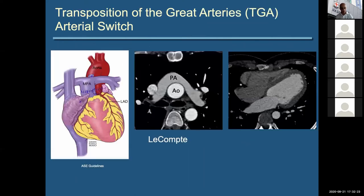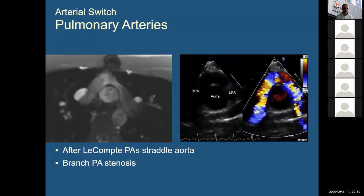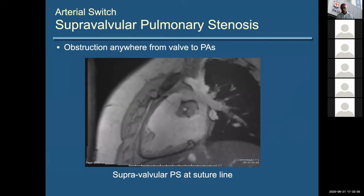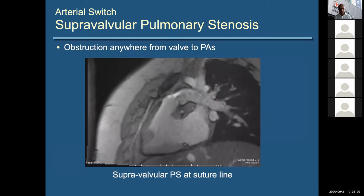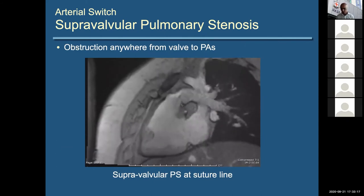The arterial switch has quite a characteristic appearance. In association with a Lecomte manoeuvre, the PAs are seen draped over the ascending aorta. Importantly, look at the ventricles — they actually look pretty normal. You don't have a big hypertrophied right ventricle because it's where it should be, doing the subpulmonic job. On MRI you can see the ascending aorta, descending aorta, and the PAs draped across it. There is a risk of branch PA stenosis because of this — the PAs straddle the aorta. You can get obstruction at any level along there. This patient has supravalvar pulmonary stenosis at the suture line where the switch was done.